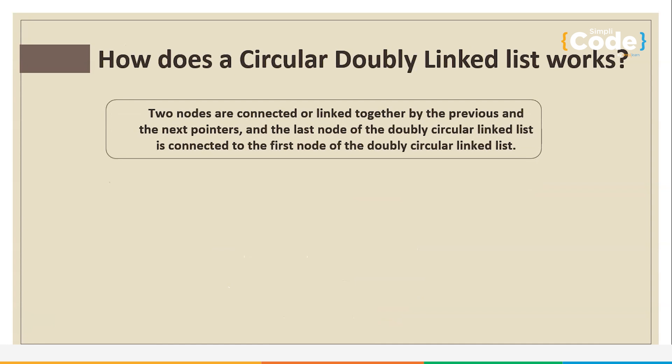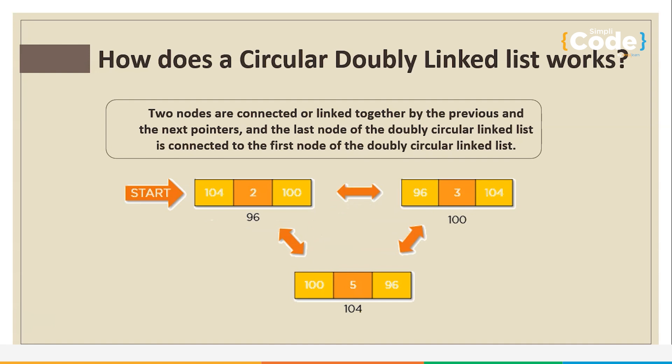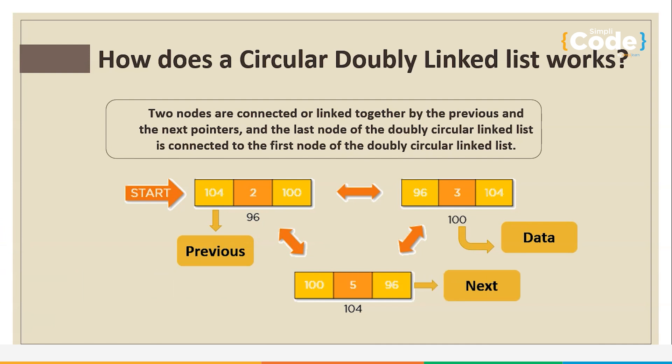In a circular doubly linked list, nodes are connected by both previous and next pointers. Each node has two pointers — one that points to the next node in the list and another that points to the previous node. The first node's previous pointer points to the last node, and the last node's next pointer points to the first node, forming a circular loop. Each node also has a data field which stores the value. This means the list can be traversed in both directions — from beginning to end or from end to beginning.